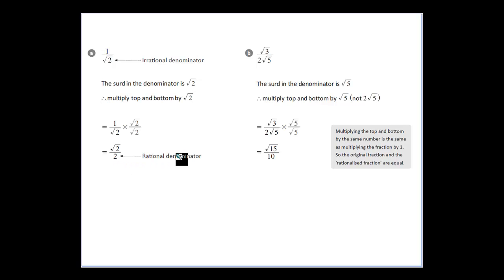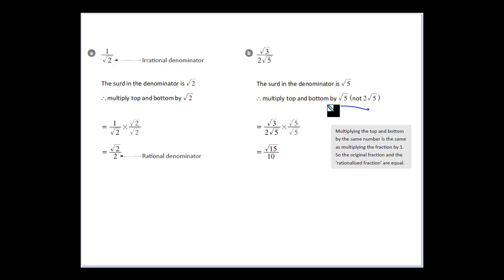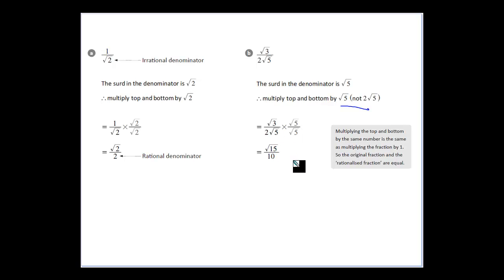That's the process we're going to look at. Take root 3 over 2 root 5 — what we need to do is multiply the fraction by root 5 over root 5, not by 2 root 5. We want the most simplified form. Multiplying by root 5 will do the job because all we want to do is rationalize the denominator. Root 5 times root 5 gives us 5, and 2 times 5 is 10. Root 3 times root 5 gives us root 15, so the result is root 15 over 10.